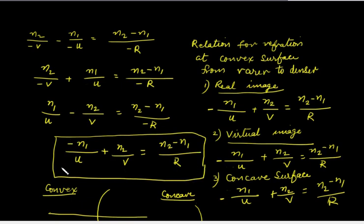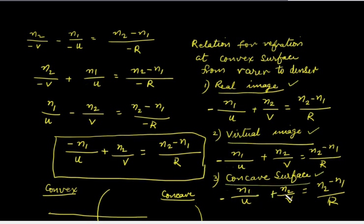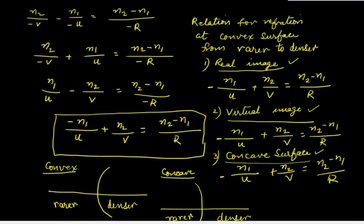Let us compare the expressions for all three cases. For a convex surface producing a real image, the expression was negative N1/U plus N2/V equals N2 minus N1 divided by R. For a virtual image from a convex surface, both equations are the same. For a concave surface, the expression is also negative N1/U plus N2/V equals N2 minus N1 divided by R — identical. We can conclude that for refraction from rarer to denser medium, whether convex or concave surface, whether real or virtual image, the expression is the same; only the derivation path and diagram differ.